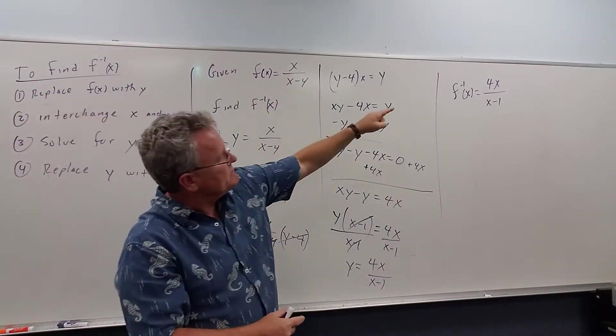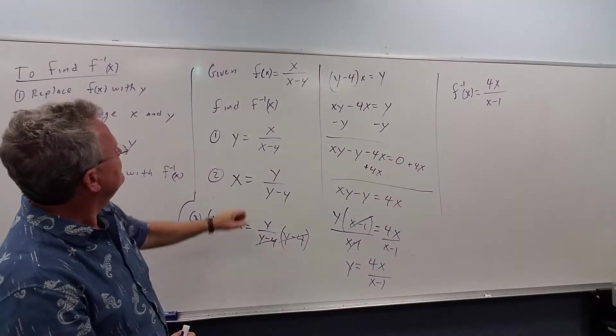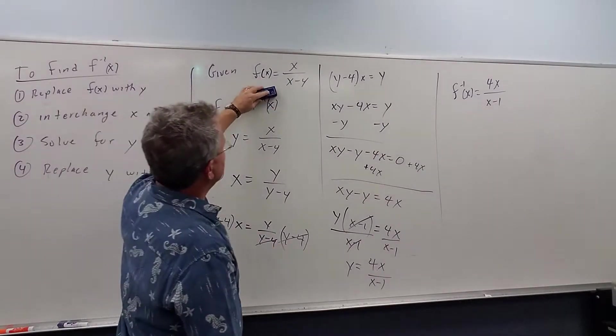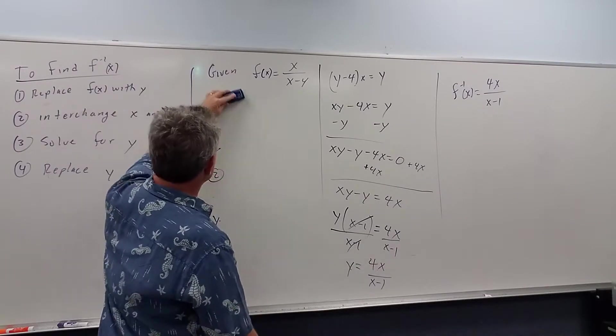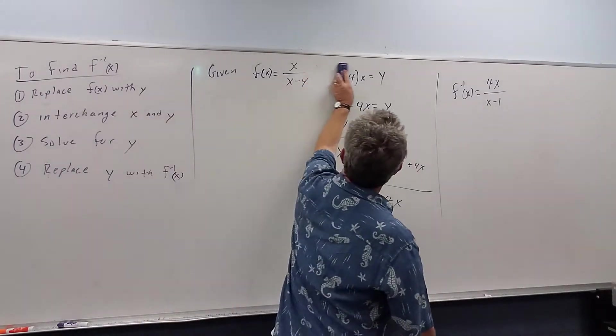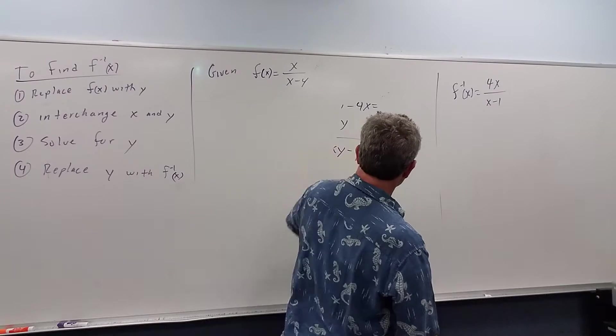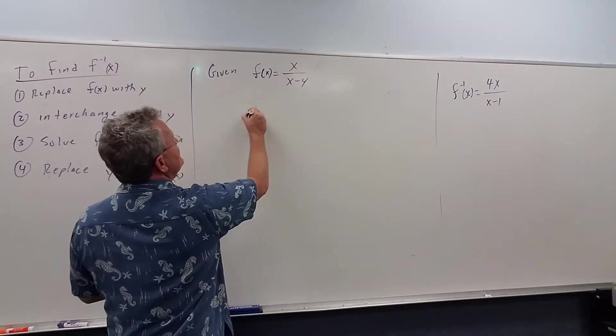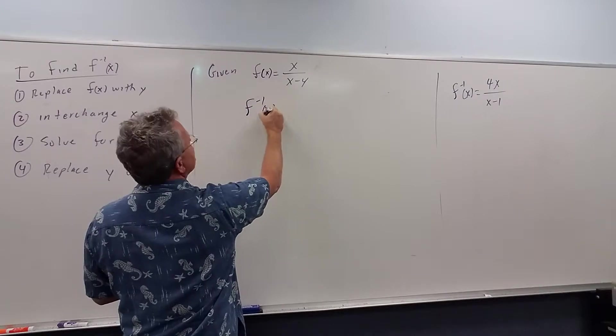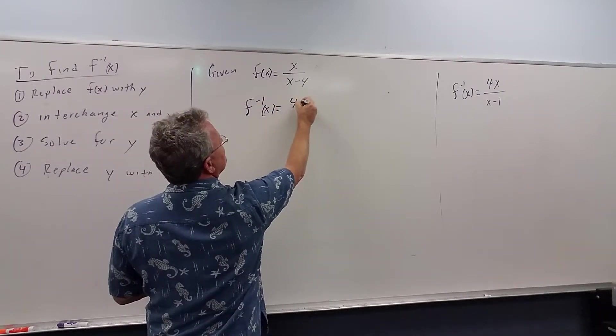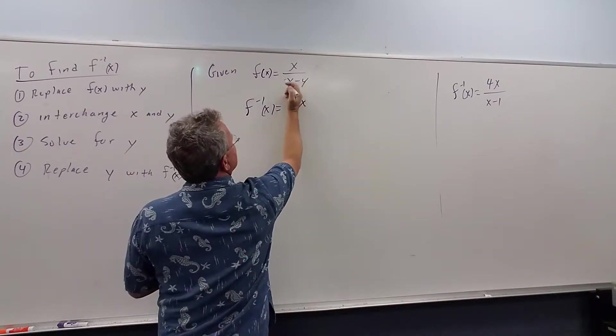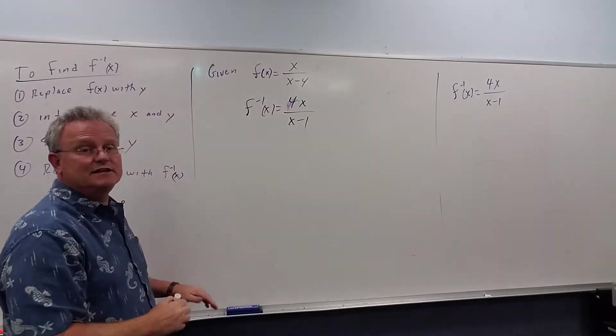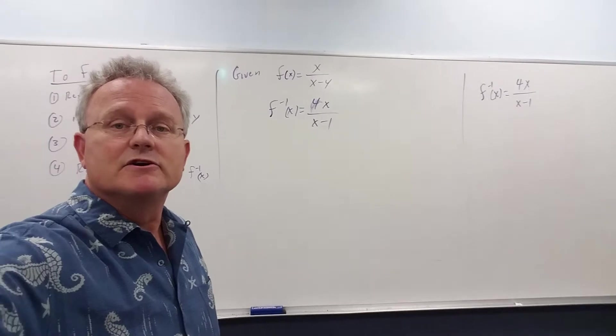Now let me explain back to the video before this. What's the relationship between this function and the original function f? So let me just erase some of this. Let's just look at our two functions here. So let's look at the inverse of this function. And the inverse is 4x over x minus 1. So that's the inverse of that function.